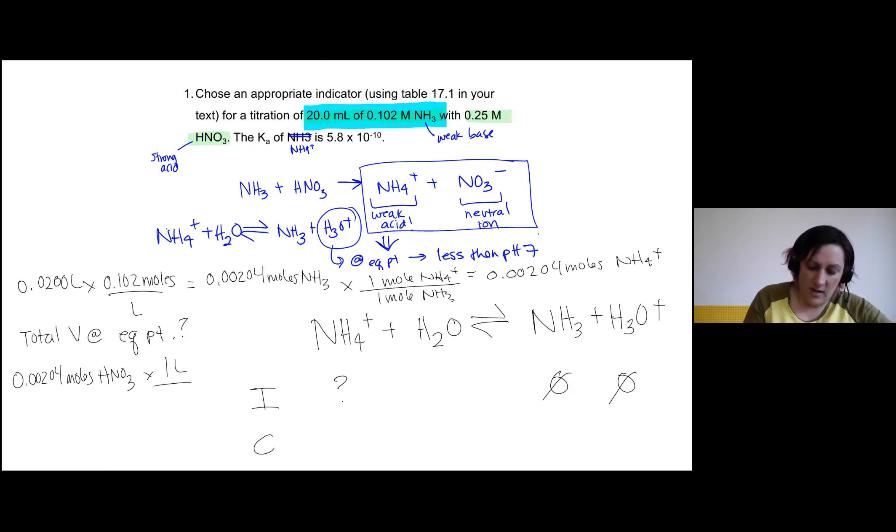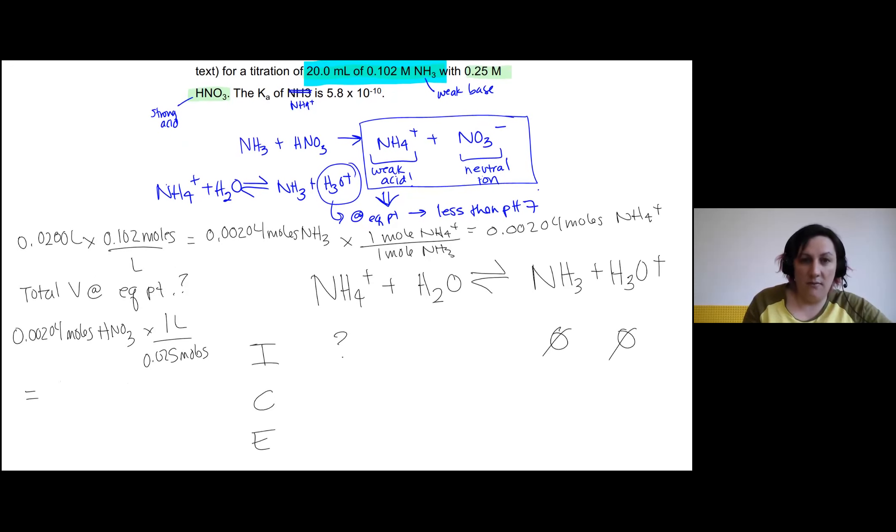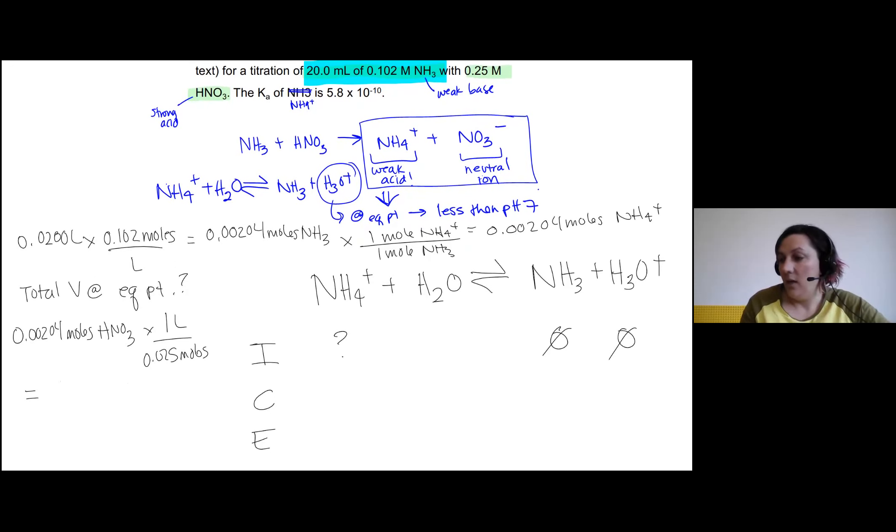So one liter divided by 0.025 moles. And that's going to give us the volume of our acid that we actually added, which is going to be 0.00816 liters. Great.